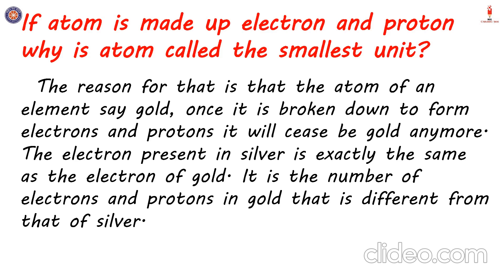The reason is that an atom of an element — say gold — if broken down to form electrons and protons, will not be gold anymore. The atom of silver is different from the atom of gold, but the electron and proton which form each atom are not different. The number of electrons and protons is different. The electron present in the atom of silver is exactly the same as the electron present in the atom of gold. So it is the number of electrons and protons which make atoms different from each other. Once broken down to individual electrons and protons, they are the same. Hence atom is called the smallest particle.